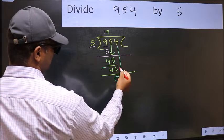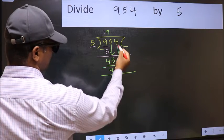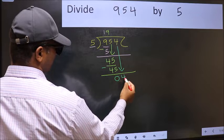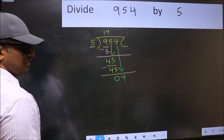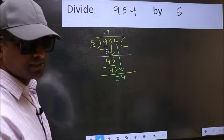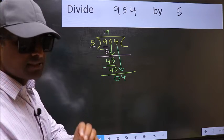After this, bring down the beside number. So 4 down. After this step, the mistake happens. And the mistake is this.